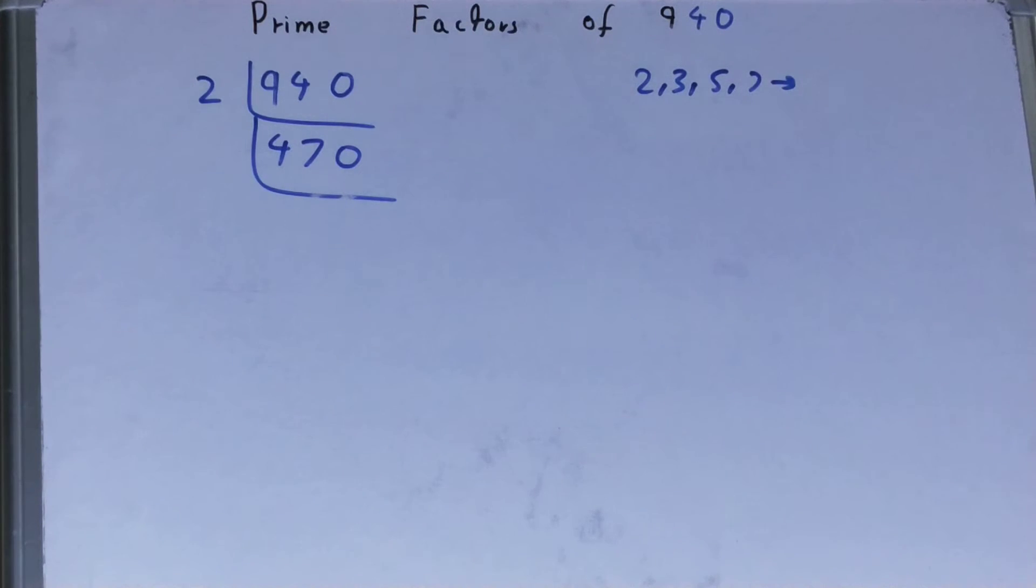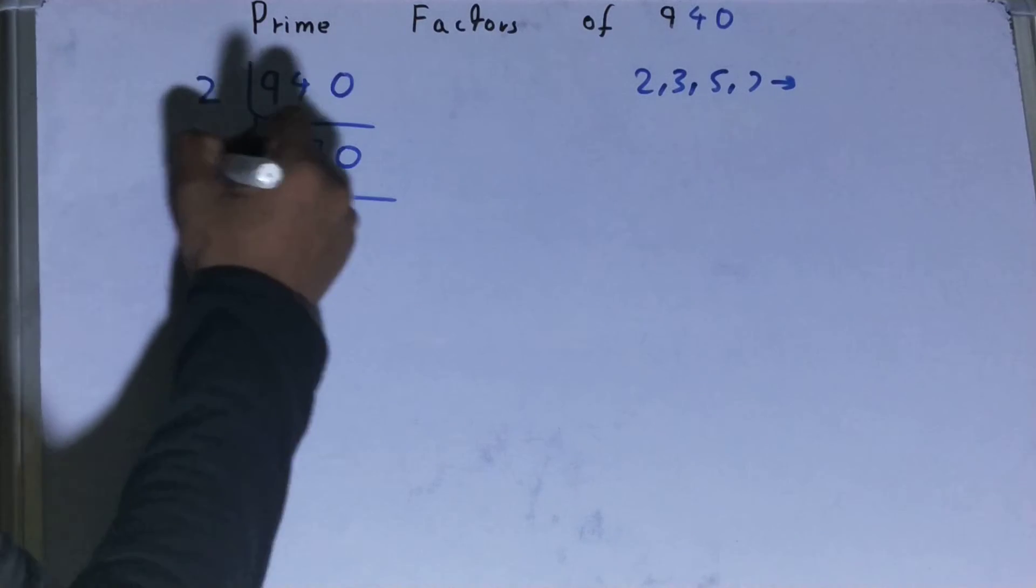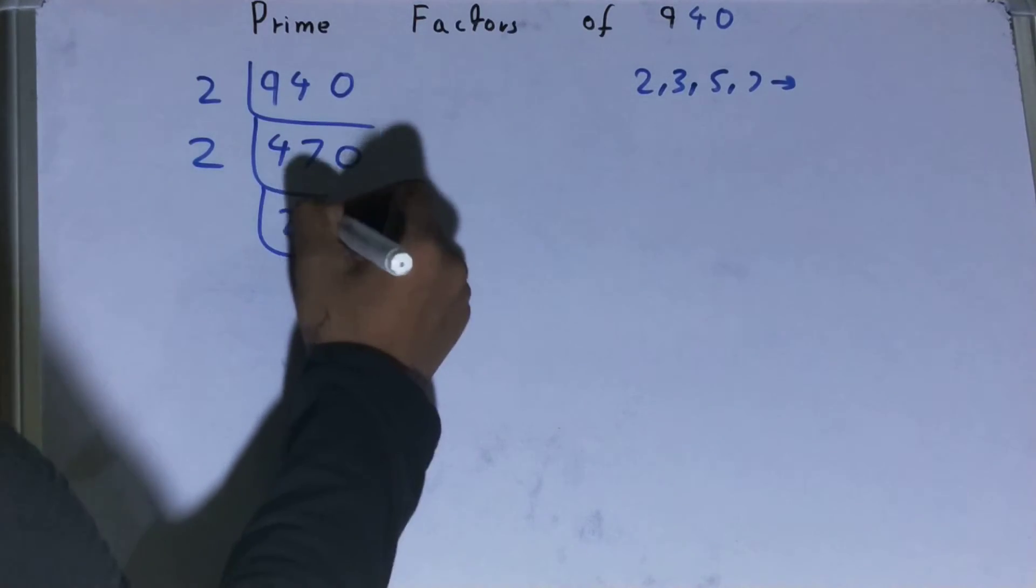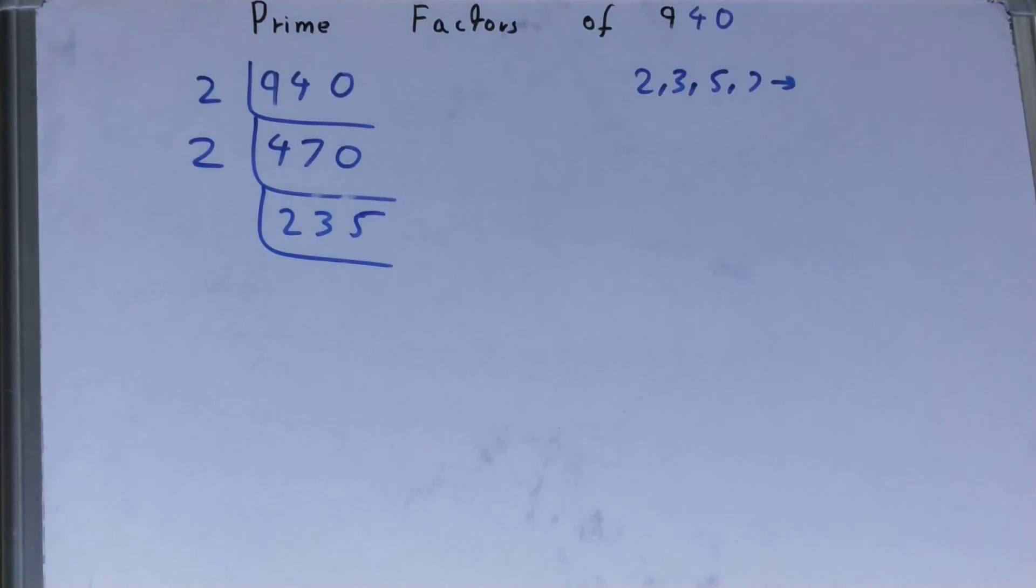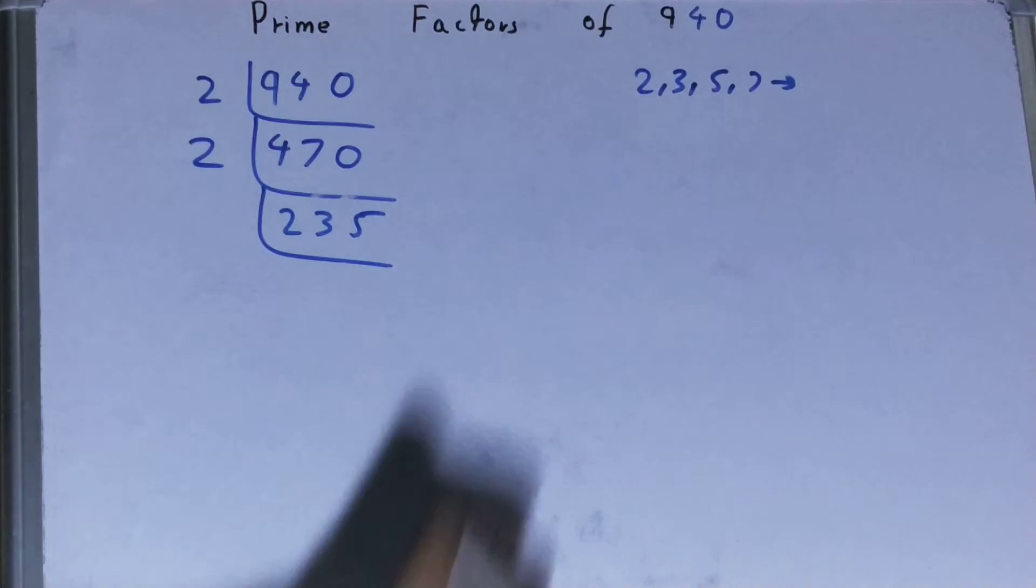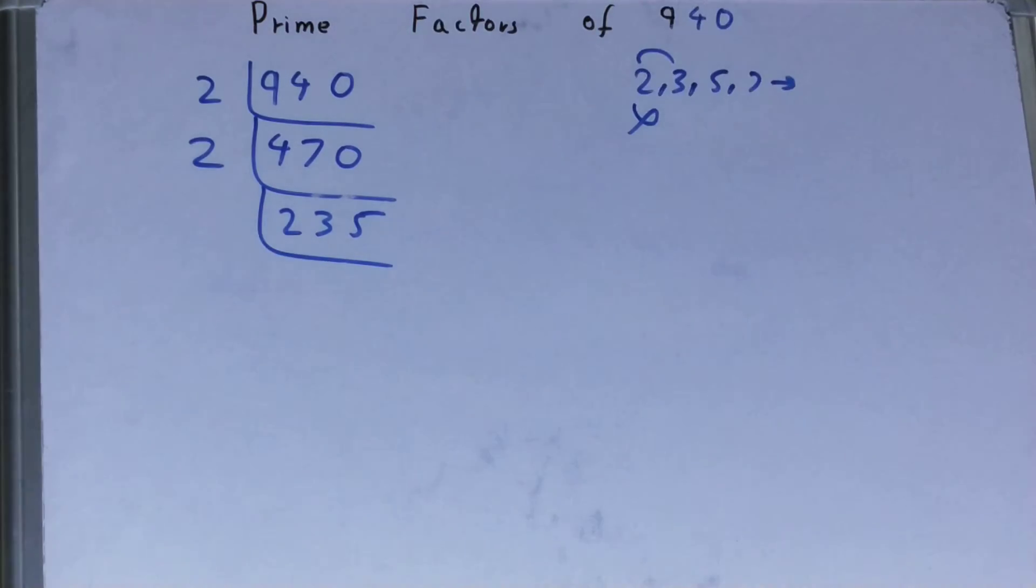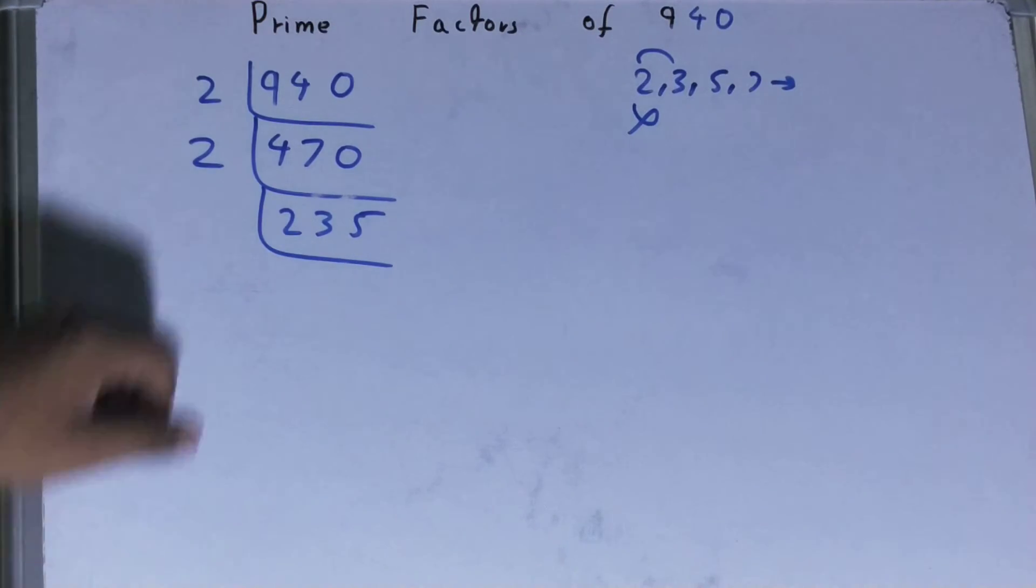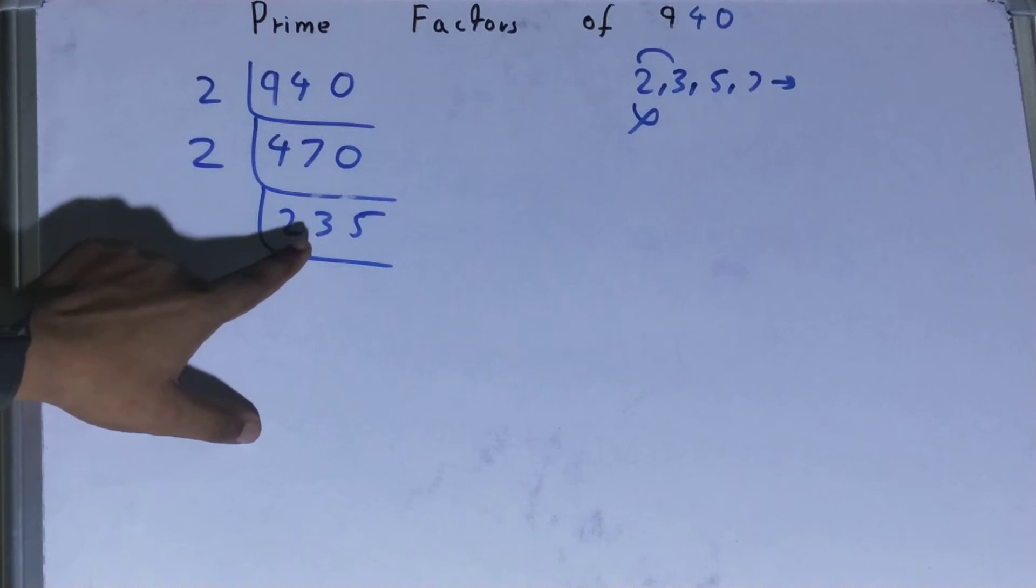Now is this 470 further divisible by 2? Yes it is, so divide it and you will be left with 235. Now is this 235 further divisible by 2? The answer is no, it is an odd number. So we'll be going to the next lowest prime number, that is 3. Is this 235 divisible by 3?